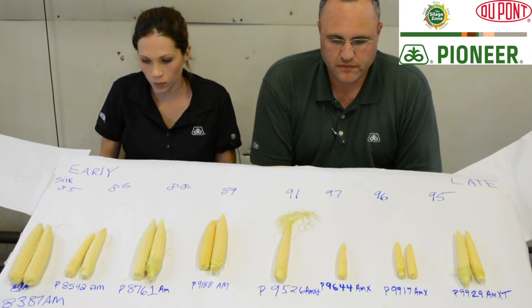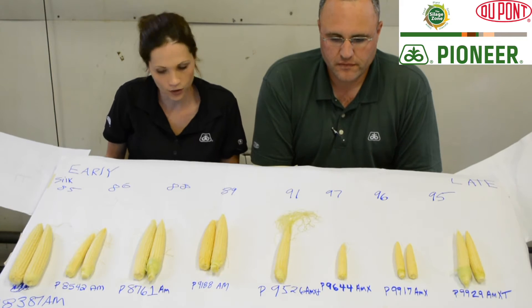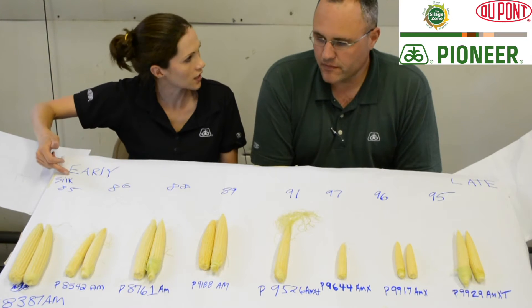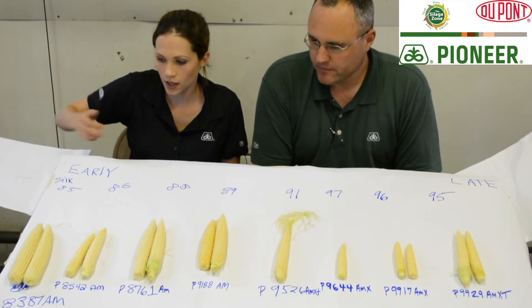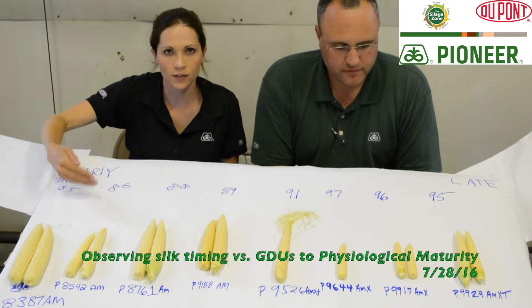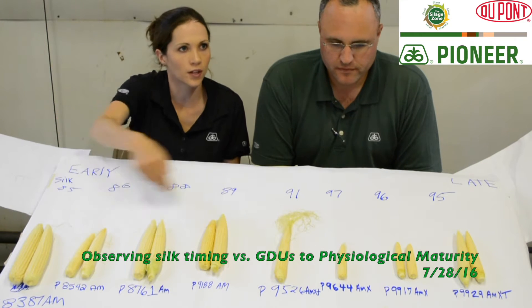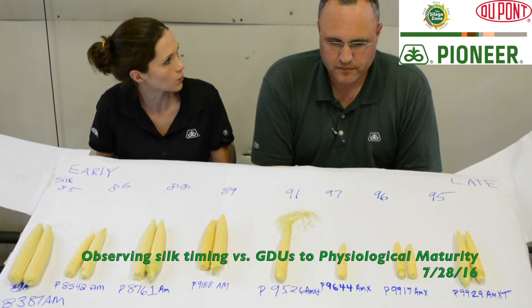So Matt, what we're seeing here is a difference in silking dates, right? Yes — silking and pollination will occur differently even within a maturity group range.